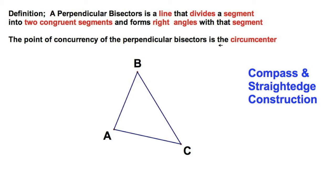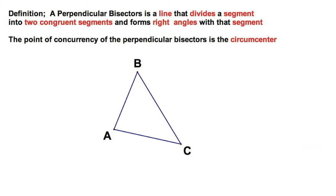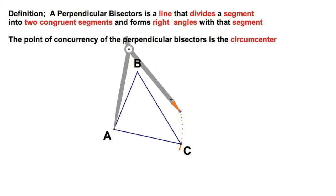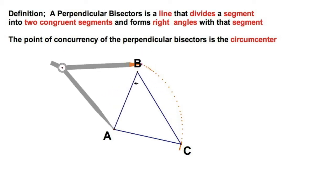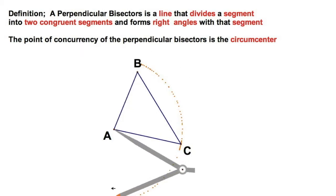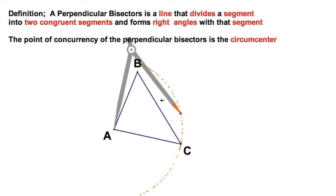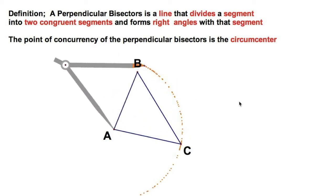We're going to start swinging the compass. For each perpendicular bisector, we're going to gap the compass. Put the needle on A and gap it to C, just like you've done before. Nothing new here. Give it a good swing like that.